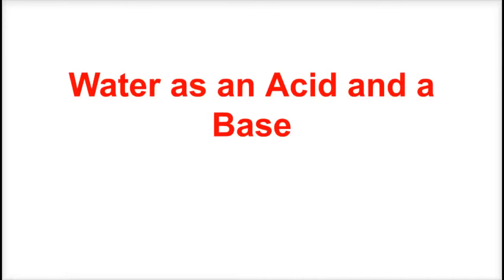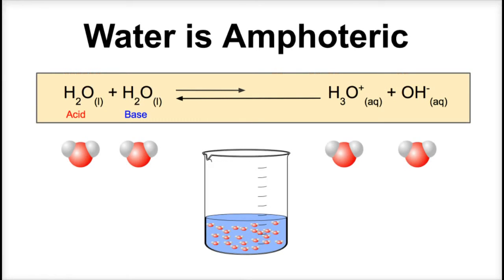Hey you guys, this is Mr. Millings and today we're going to talk about water as being both an acid and a base. A substance is said to be amphoteric if it can behave either as an acid or as a base, and water is the most common amphoteric substance there is. We can see this clearly in the ionization of water, which involves the transfer of a proton from one water molecule to another to produce a hydroxide ion and a hydronium ion.